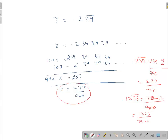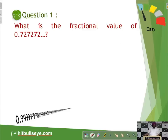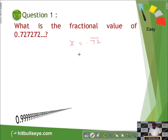Now let us do some questions based on these two concepts. First question: what is the fractional value of 0.727272 infinitely? It is definitely a pure recurring number of the type 0.72 bar. To convert it into a fraction, we simply put the number of nines in the denominator equal to the number of digits repeated. It is 72 by 99, which simplifies to 8 by 11.